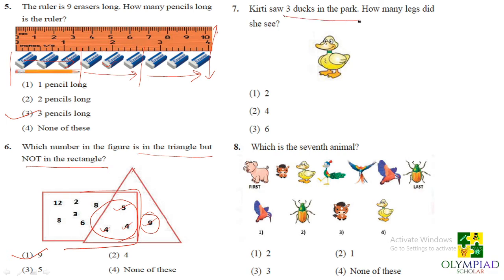Next question, Kirti saw 3 dogs in the park. So this is one dog. So there are 3 dogs in the park. How many legs did she see? See, for the first dog 2 legs, for the second dog 2 legs and the third dog 2 more legs. So here we can say that she saw 6 legs.